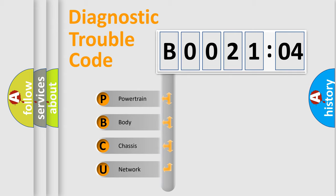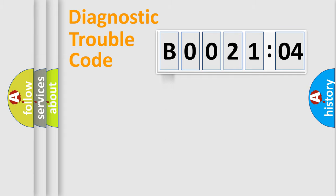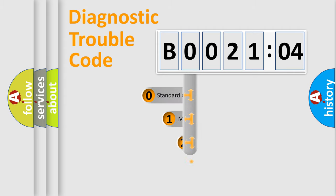We divide the electric system of automobile into four basic units: Powertrain, Body, Chassis, and Network. This distribution is defined in the first character code.